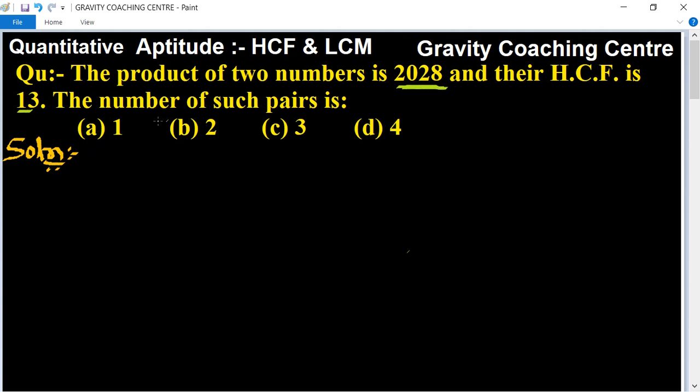The product of two numbers is given as 2028 and HCF is 13. In this question, first we let the two numbers be 13x and 13y.